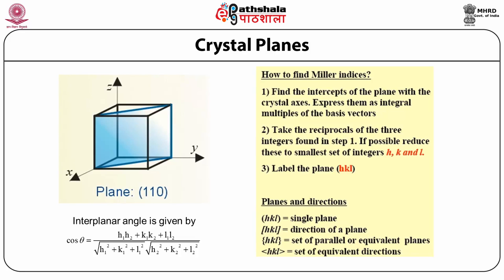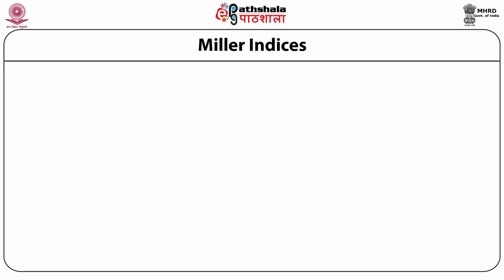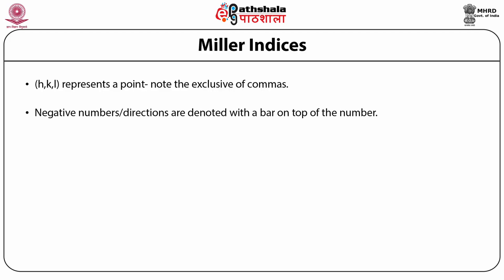How to find Miller indices: First, find the intercepts of the plane with the crystal axes, then express them as integral multiples of the base vectors. Second, take the reciprocal of the three integers found in step one, and if possible, reduce these to the smallest set of integers h, k, and l. Then label the plane (h k l) — the Miller indices. Note: negative numbers or directions are denoted with a bar on top of the number.